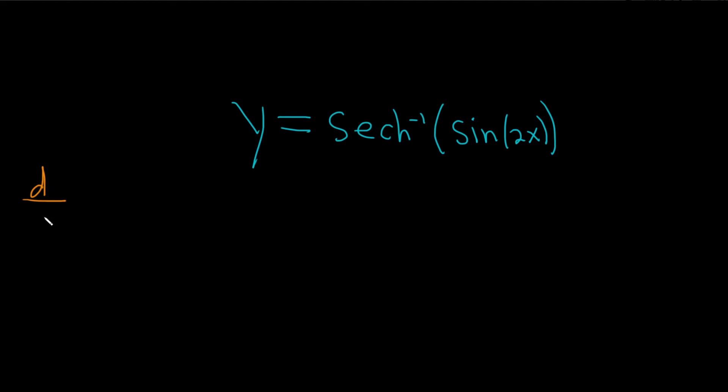The formula we're going to need is this one. So d/dx of the inverse of the hyperbolic secant of x. So this is equal to, it's quite a peculiar formula, it's negative 1 over x, and then we have a square root, and then it's 1 minus x squared.